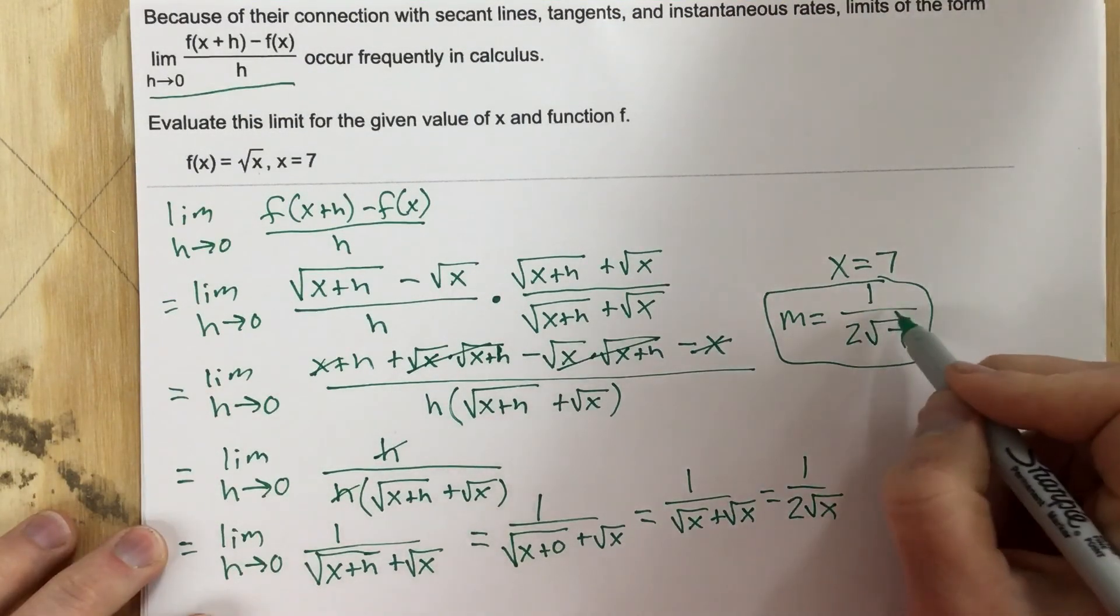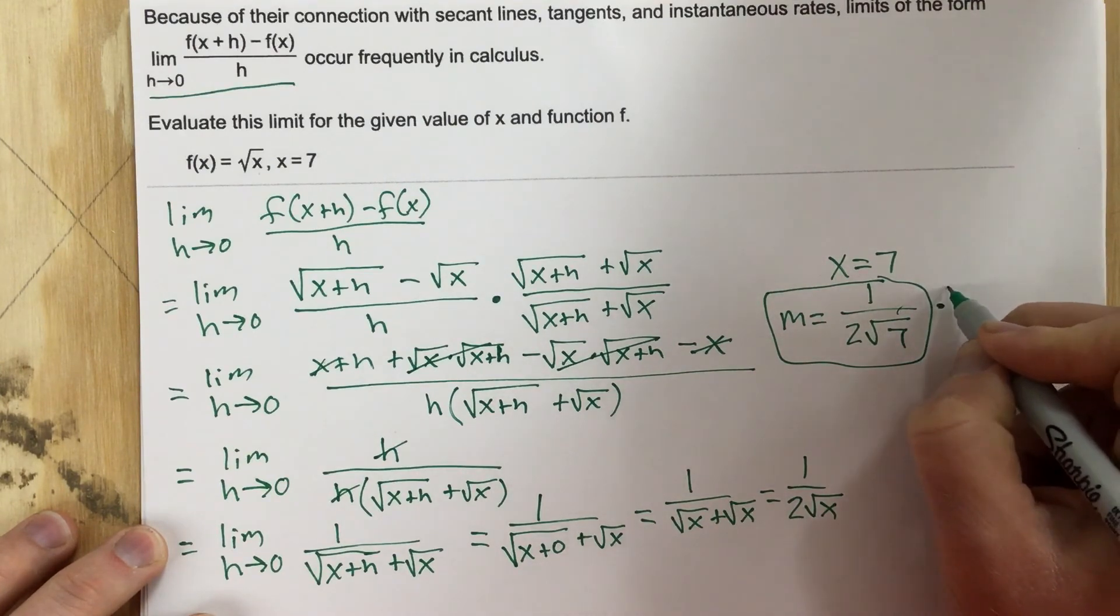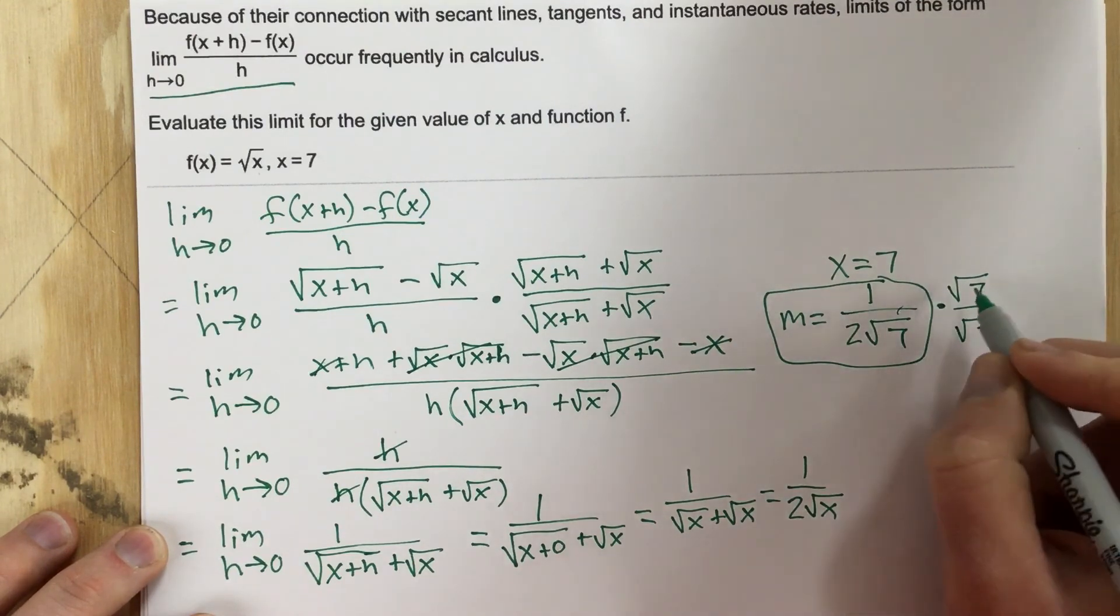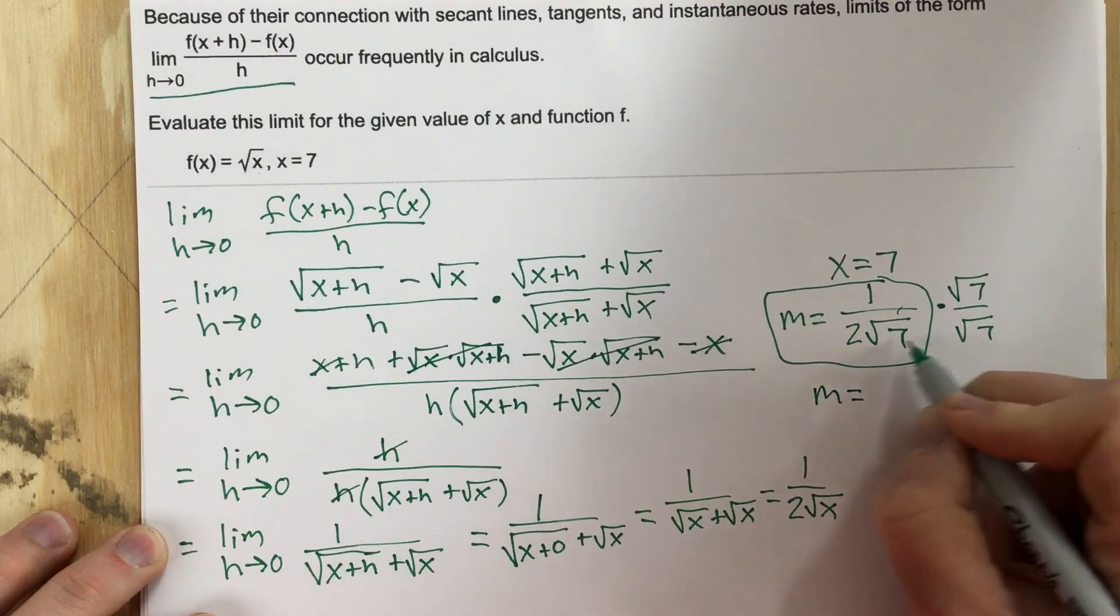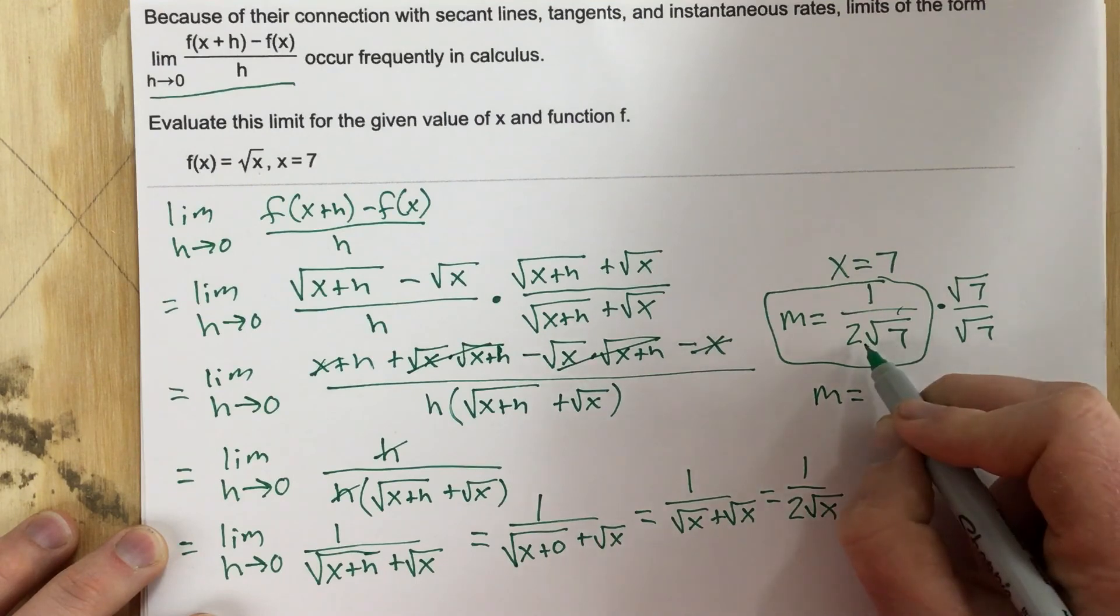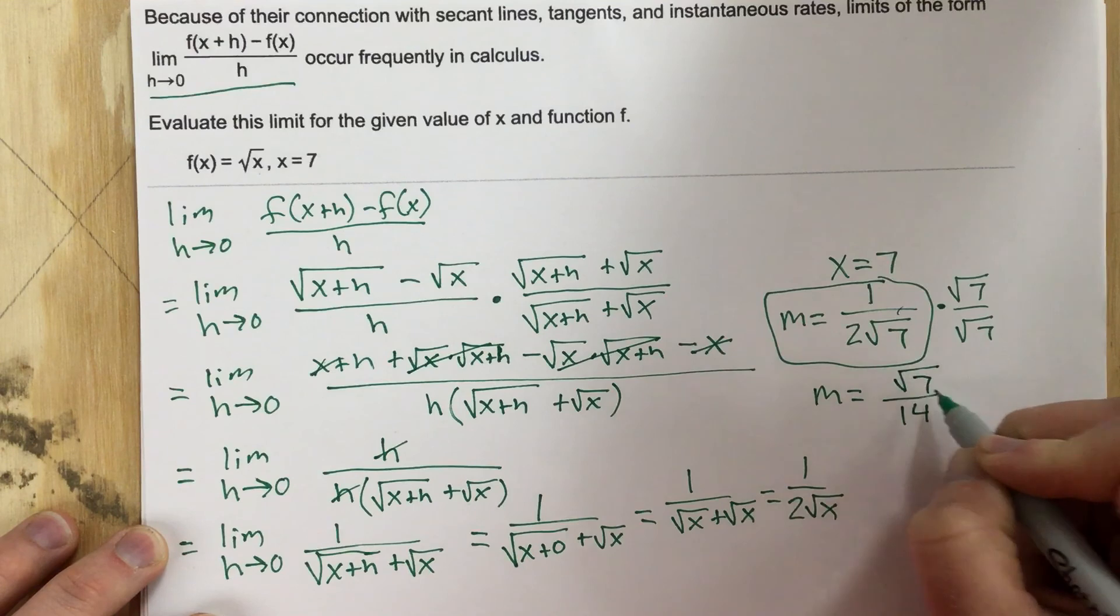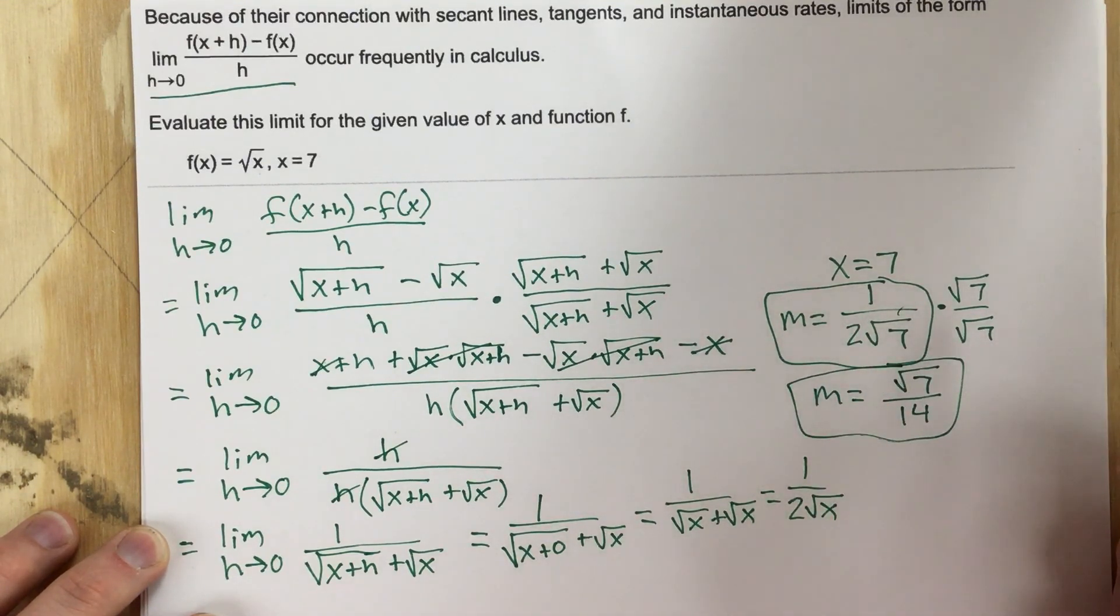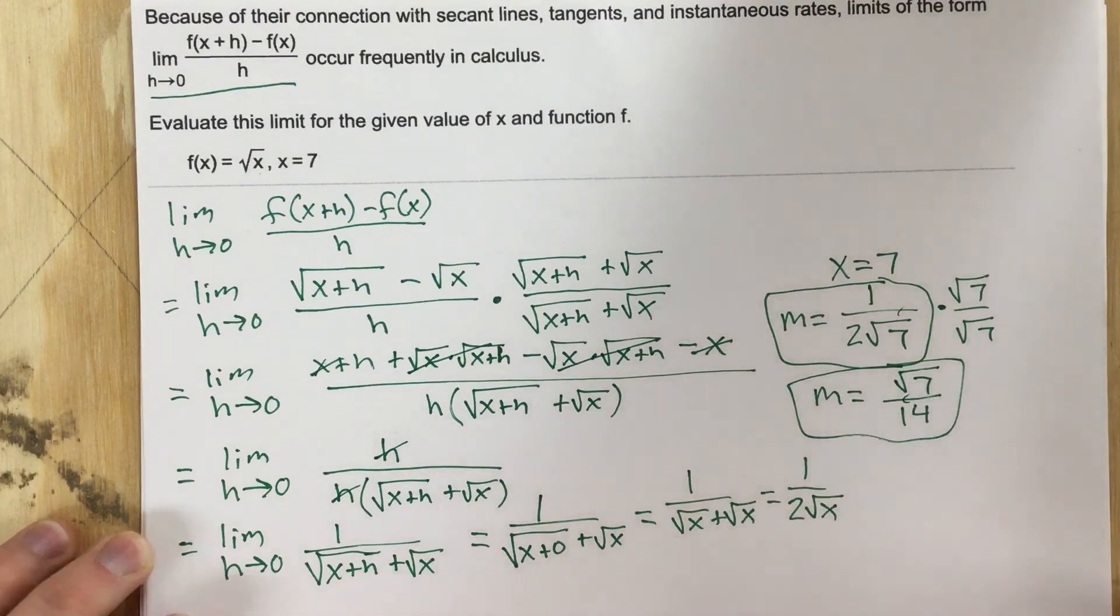Now they might have you rationalize this denominator, so I might as well go through that real quick. How would I rationalize this? I'm going to multiply by root 7 over root 7. And when I do that, I end up with m equals... On the bottom, root 7 times root 7 is 7. So I end up with 7 times 2, which is 14. And on top, I get root 7. So these are the two ways you could write it. This would be with a denominator that's not been rationalized, and this is with a rationalized denominator.